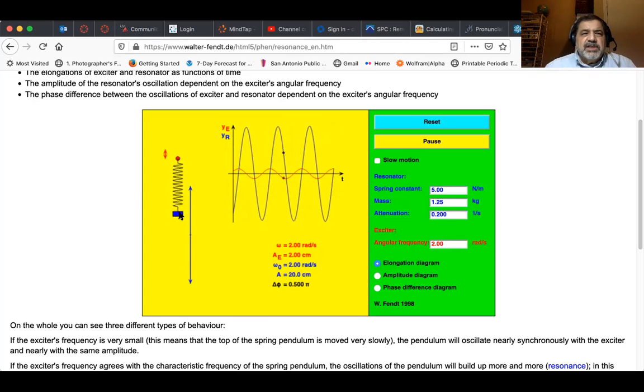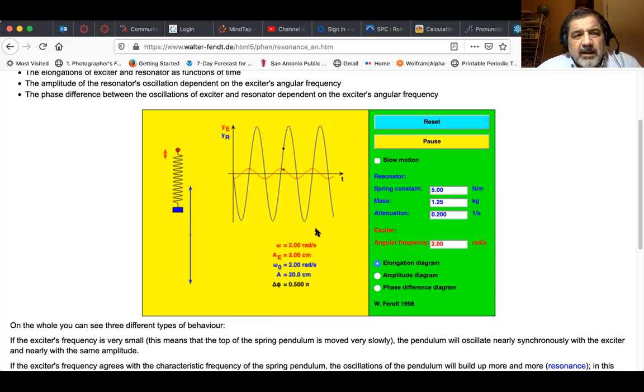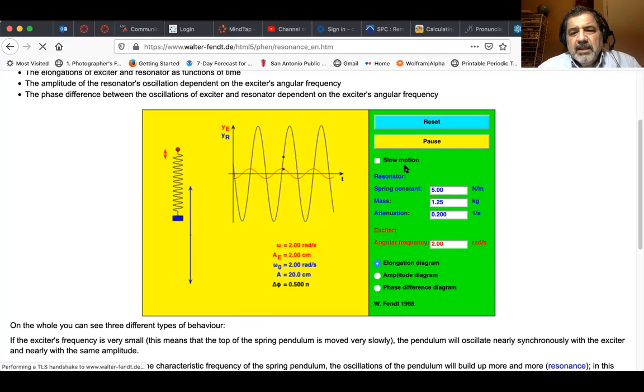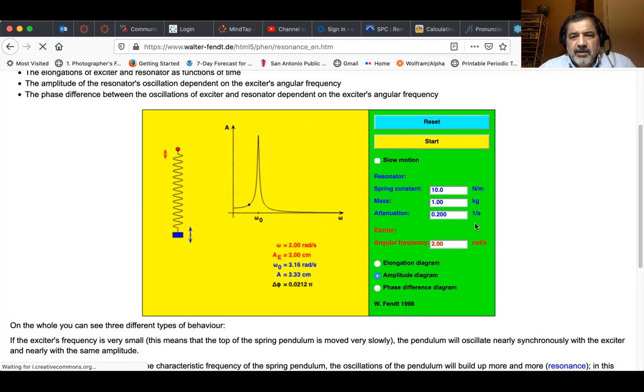And now let's reset that again. And let's stick with the values of 10 and one, but if we do the square root of 10 divided by one, we get 3.16. And so let's put that in for our exciter frequency and see what happens. And let's just start it.